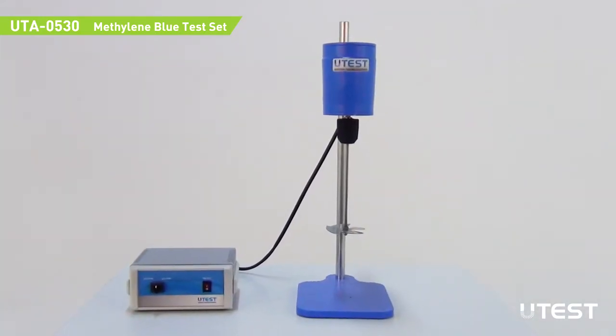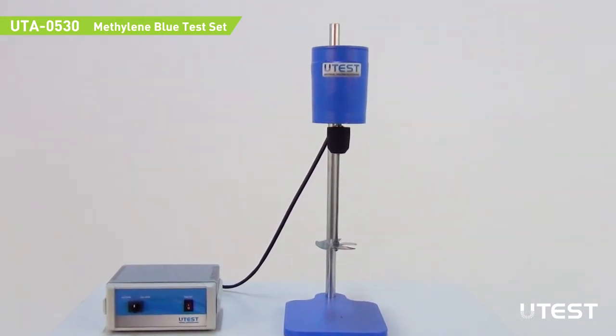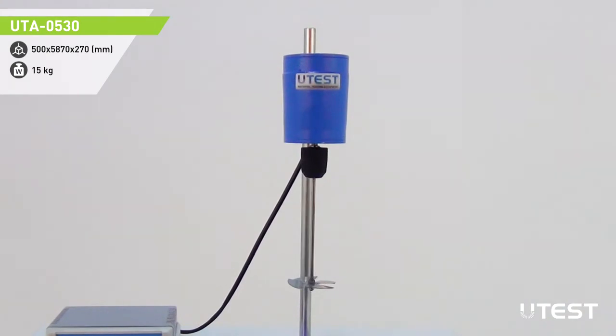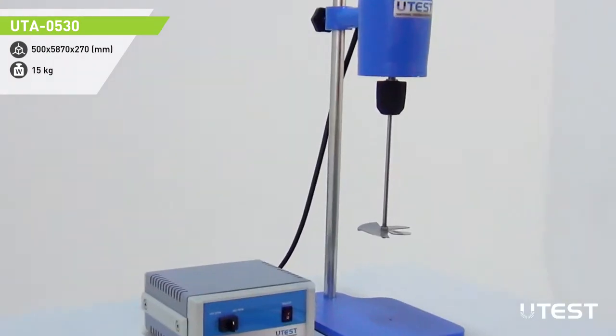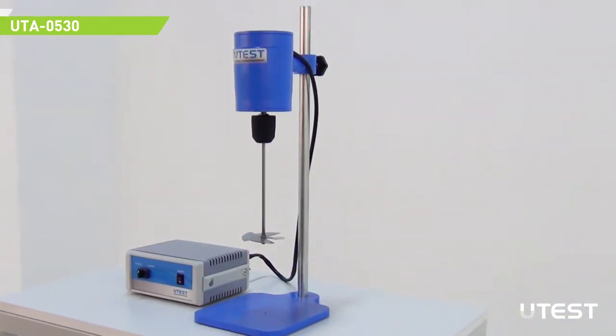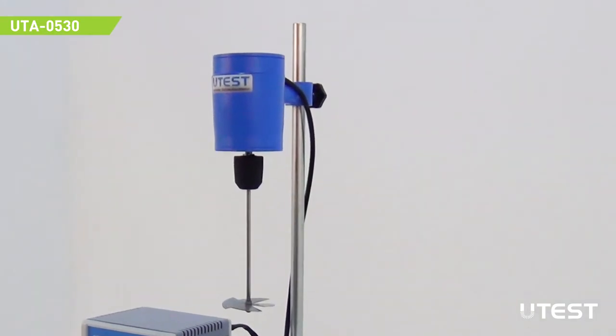Set consists of a stirrer which has two adjustable speeds of 400 and 600 RPM. The motor is electronically operated by a microprocessor. A stirring propeller is placed at the tip of the rotating shaft. The stirrer is fixed on a support base that allows height adjustment.